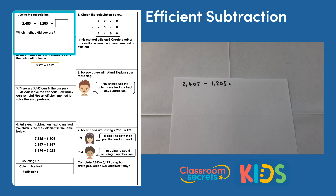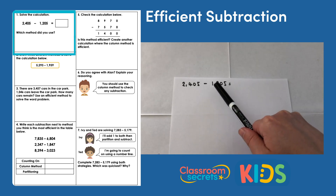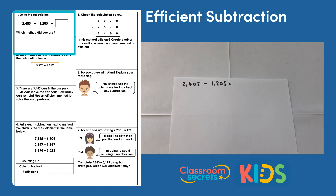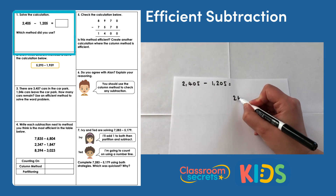Looking at the two numbers, I can see that my ones digit is the same and my tens digit is the same, so I could actually just count on in hundreds until I found the answer. That's one way to do it. You could partition it to just find the difference between the thousands and the hundreds. If you wanted to check it, you could use a column method.